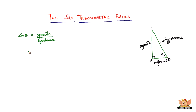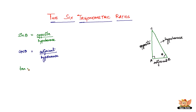The next one is cos theta. Cos theta is nothing but adjacent divided by hypotenuse. The next one after that is tan theta. Tan theta is nothing but opposite divided by adjacent.